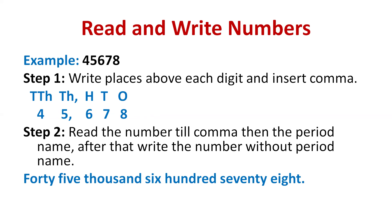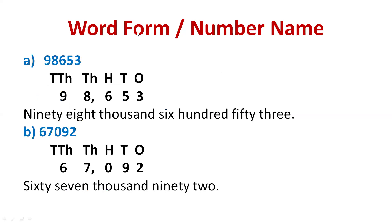Now we will take some more examples. In your books, they may say 'write the word form' or 'write the number name.' Here we have the number 9, 8, 6, 5, 3. First, write the places above the numbers starting from the right: above three — ones; above five — tens; above six — hundreds; above eight — thousands; above nine — ten thousands. Put a comma after three digits. The number is: ninety-eight thousand six hundred fifty-three.